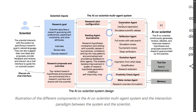Here is the main crux of the ecosystem. The system provides multiple agents: a generation agent, reflection agent, evolution agent, proximity check agent, meta-review agent, ranking agent, tournament, and research plan configuration. Once all these agents combine and reach a final solution, the AI Co-Scientist continuously generates, reviews, debates, and improves research hypotheses.